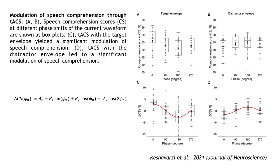This stronger modulation may point to an effect of TACS with the target envelope that goes beyond auditory stream formation, such as by aiding the parsing of the speech stream into syllables and words.